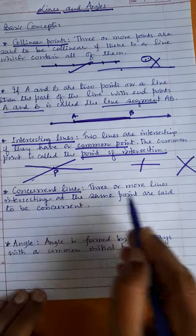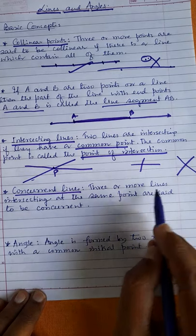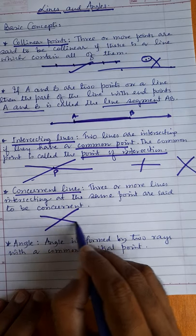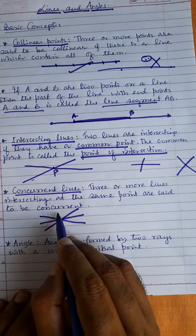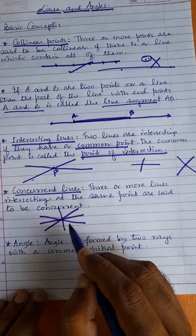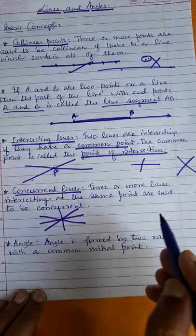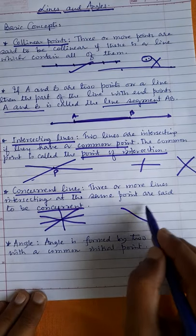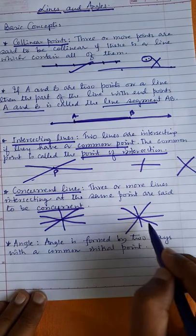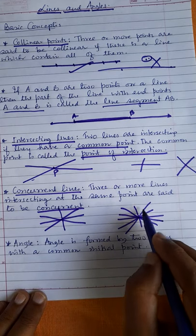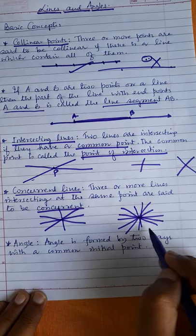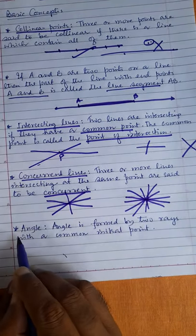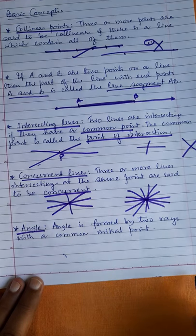Next is concurrent lines. Three or more lines intersecting at the same point — these lines are called concurrent lines, or said to be concurrent. Any number of lines passing through the same point are called concurrent lines.